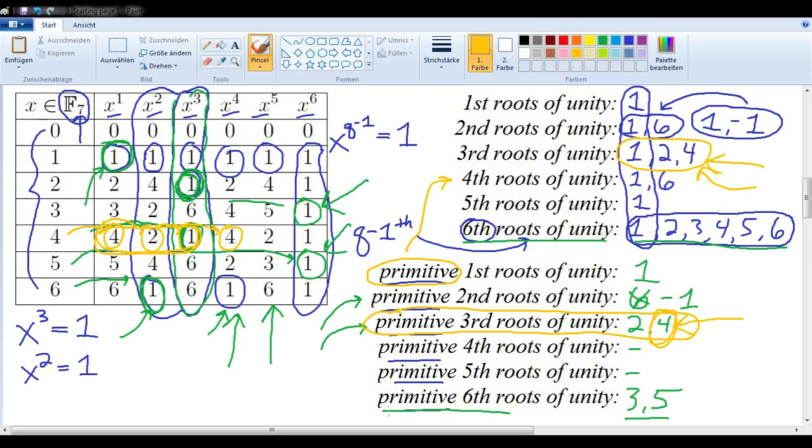We'll take a look at one more example. Primitive 6th roots of unity. We'll take maybe this 3. 3 times 3 gives us 2, and 3 times 3 times 3 gives us 6, and 3 times 3 times 3 times 3 gives us 4. Then we get 5, and then we get 1. In other words, 3 generates for us 1, 2, 3, 4, 5, and 6.